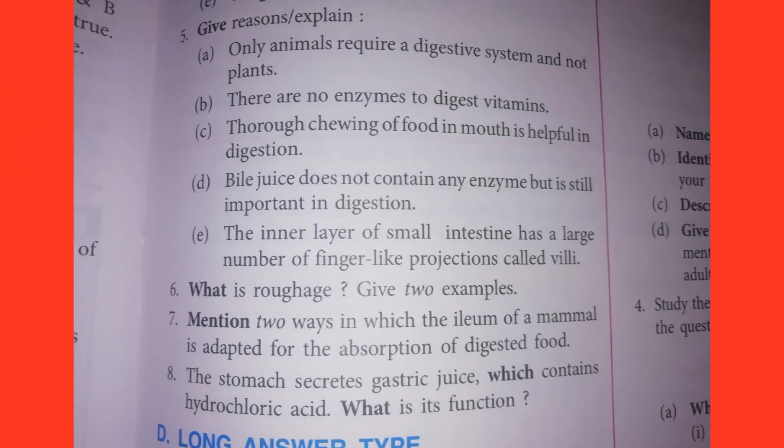Seventh one: Mention two ways in which the ileum of a mammal is adapted for the absorption of digested food. Answers showing on screen.